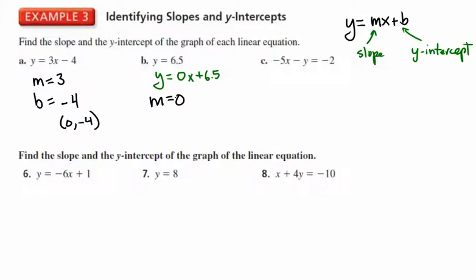You can also think of y equals 6.5 as the line where all points have a y-coordinate of 6.5, which means it's a horizontal line. We know the slope of a horizontal line is always 0. Its y-intercept is 6.5, or as an ordered pair, (0, 6.5).